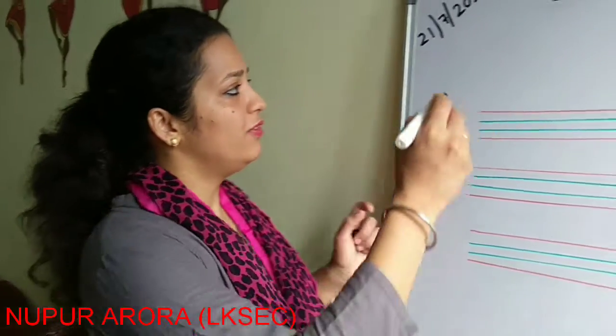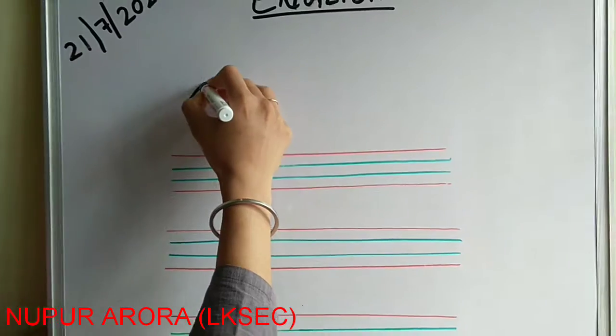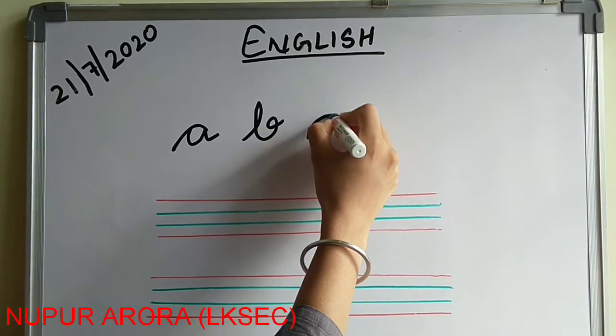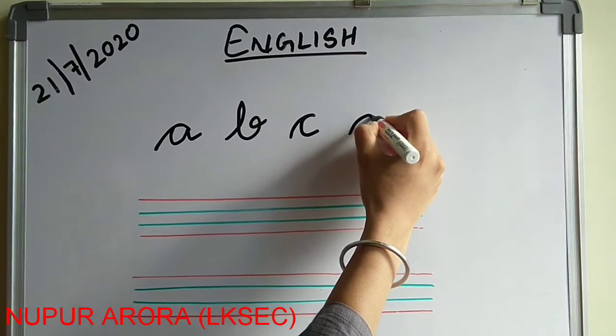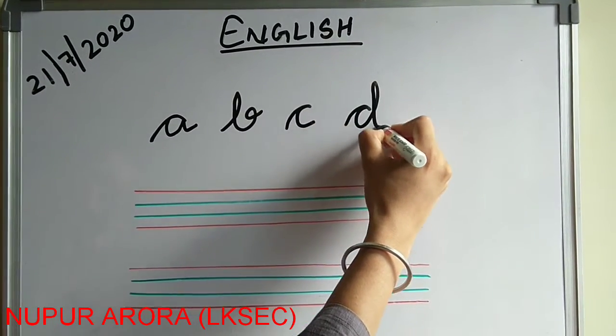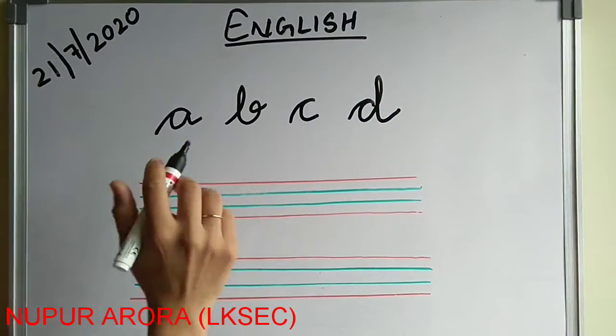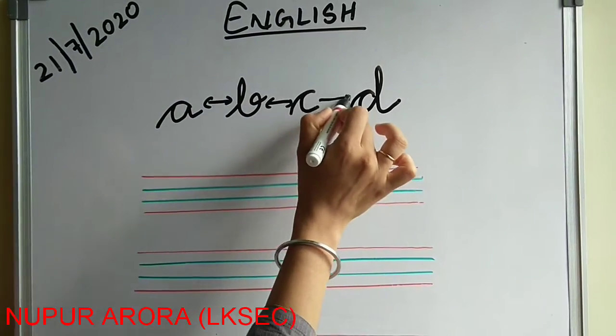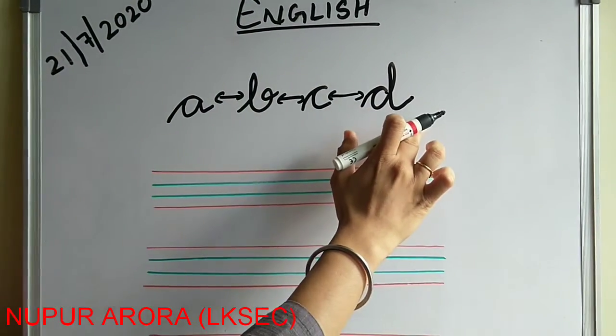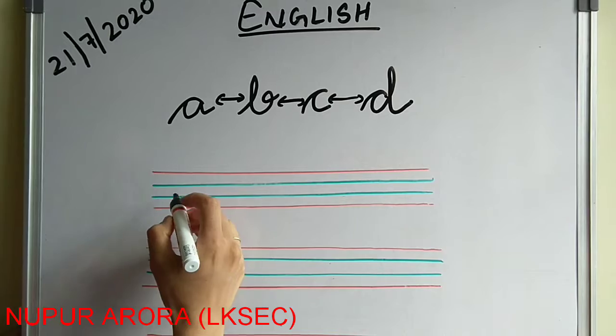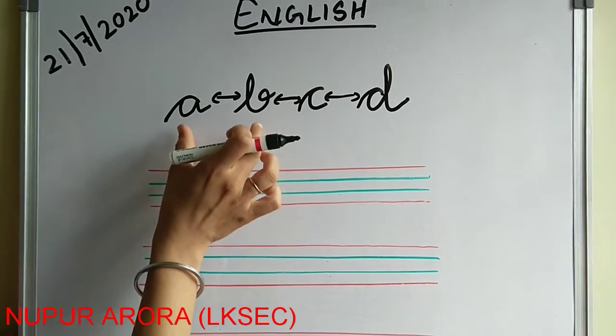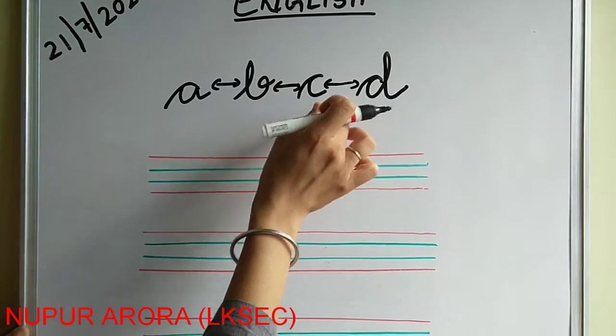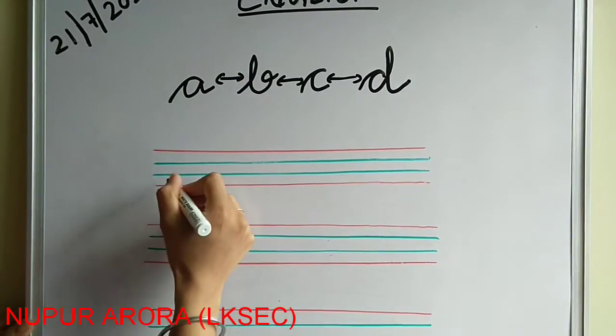So like we have learned A, B, C, D like this, but now we will learn how to connect these alphabets with each other. See what you have to write, like if you want to connect this A to B, B to C, or C to D, you will do like this.